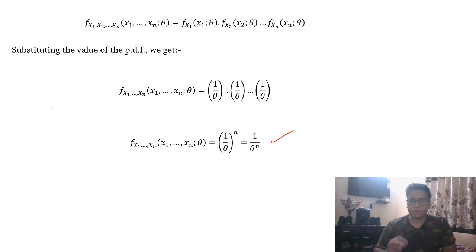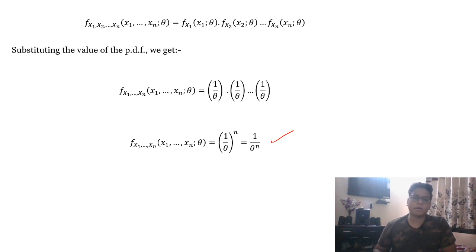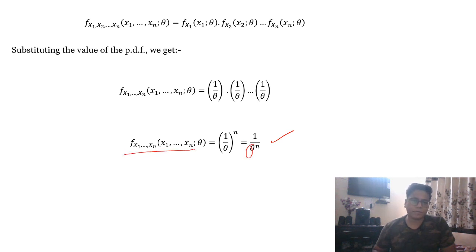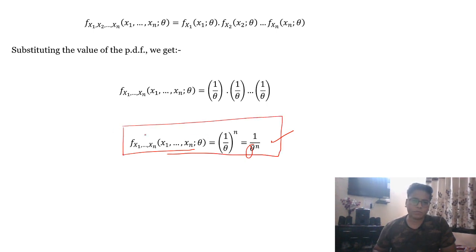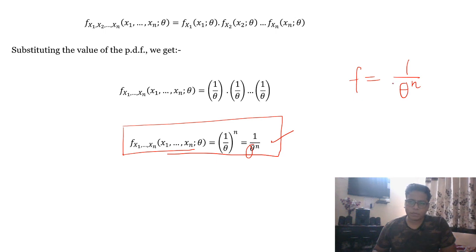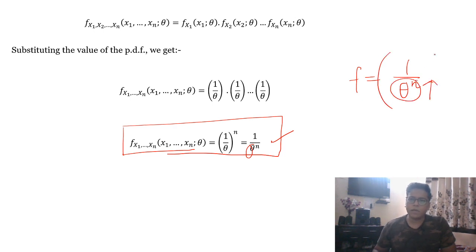Now for part B, the question asks for the value of θ that maximizes this joint PDF. We can see the relation between θ and the PDF: f = 1/θⁿ. Since θ is in the denominator, if θ increases, the denominator increases and the whole value declines.